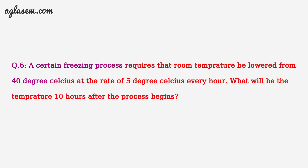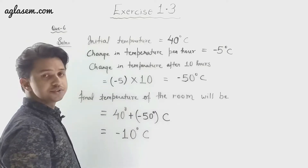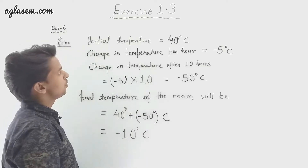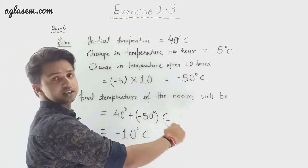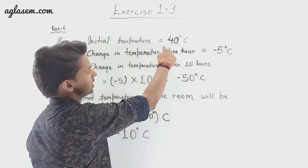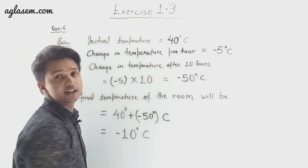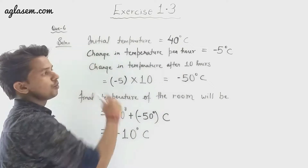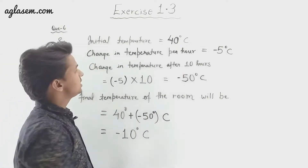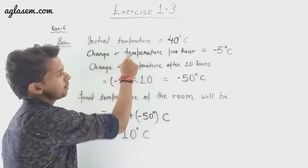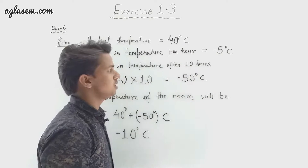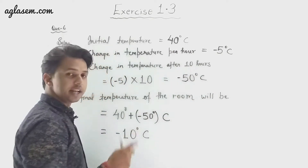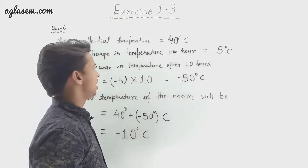In the solution, the initial temperature is 40 degrees Celsius as given in the question. The change in temperature per hour is minus 5 degrees because the temperature is getting lowered every hour.